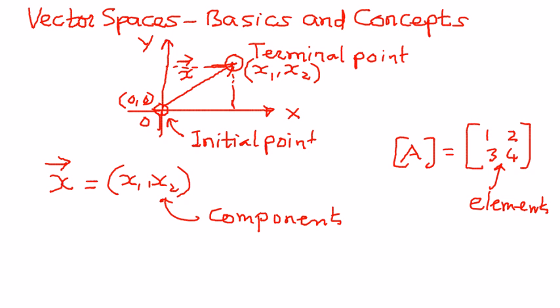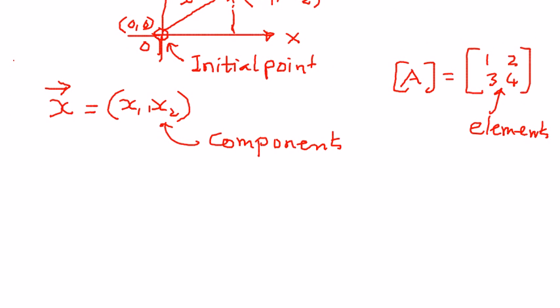So a vector could be represented as x with an arrow on top of it, or u with an arrow on top of it. And then the components of that could be u1 comma u2. Or it could be a vector v with its components v1 comma v2. Where x1, x2, or u1, u2, or v1, v2 are called the components of the vector x, u, or v.